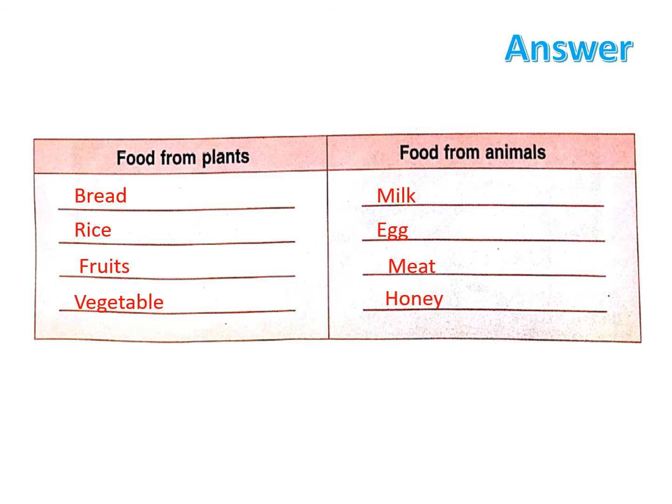Answer is given here. Food from plants includes bread, rice, fruits, and vegetables — these all things we get from plants. And food from animals: we get milk, egg, meat, and honey — these all things come from animals. In this way you can write the answers of these questions.